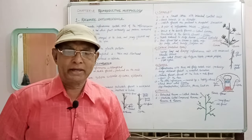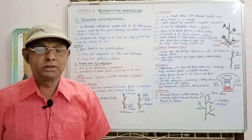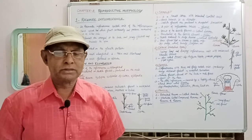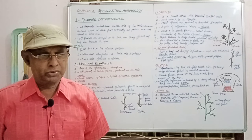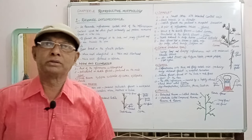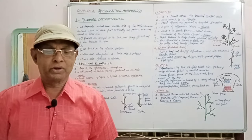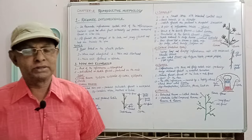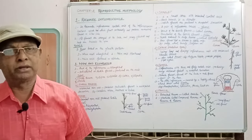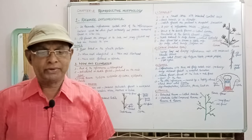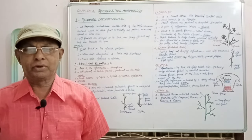Second, spike inflorescence. Here also the main axis of the inflorescence is unbranched, but it produces sessile flowers. The only difference between simple raceme and spike inflorescence is that in simple raceme pedicellated flowers are produced, whereas in spike inflorescence sessile flowers are produced on the unbranched axis in acropetal fashion. The opening of the flower is centripetal. For example, Achyranthes and Stachytarpheta.